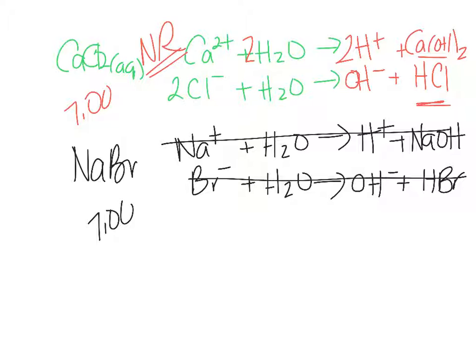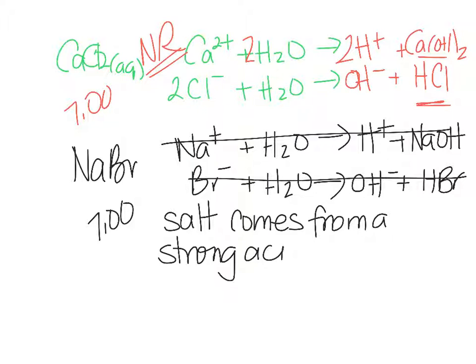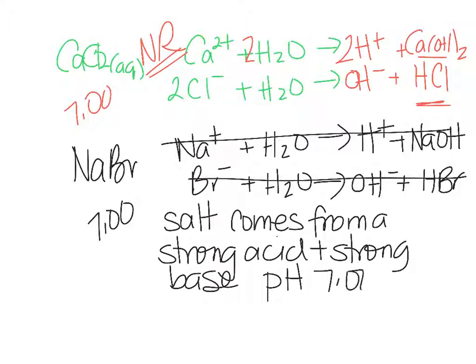So if your salt comes from a strong acid and a strong base, it will always be pH 7 because you cannot reverse the reaction. It cannot be reversed.